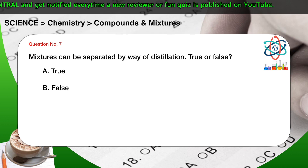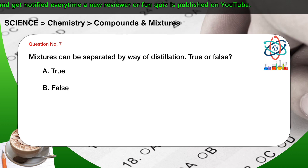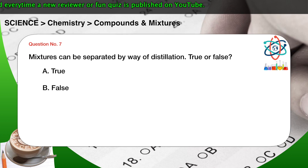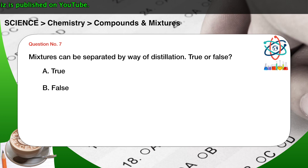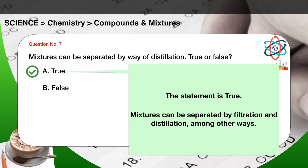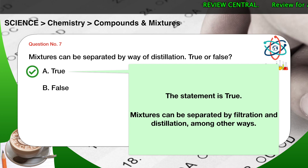Question number 7. Mixtures can be separated by way of distillation. True or false? A. True. B. False. The correct answer is A. The statement is true. Mixtures can be separated by filtration and distillation, among other ways.